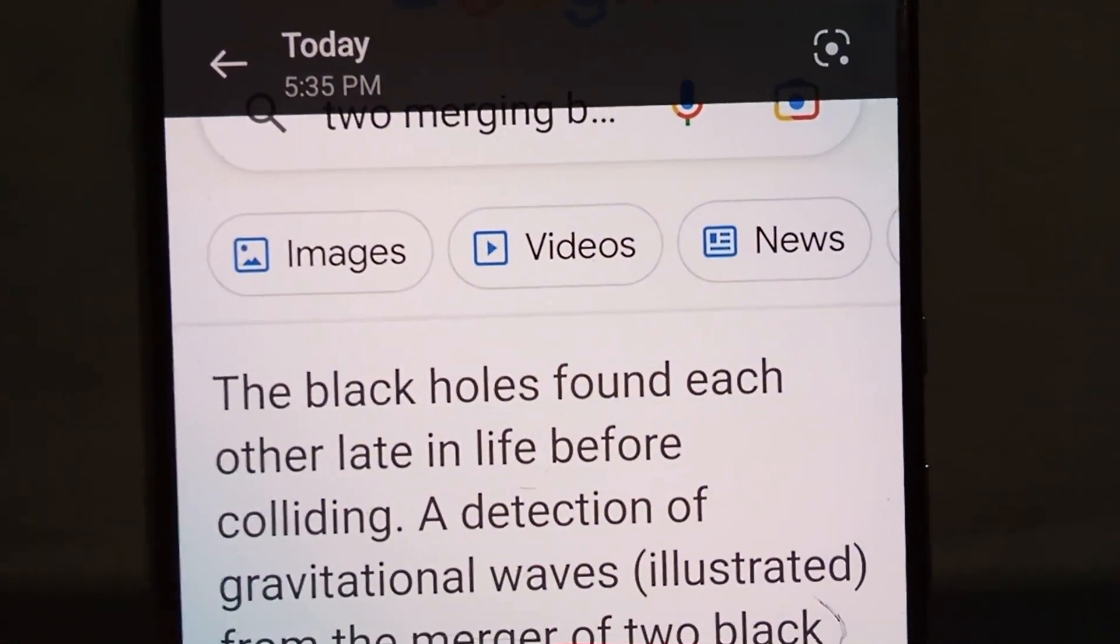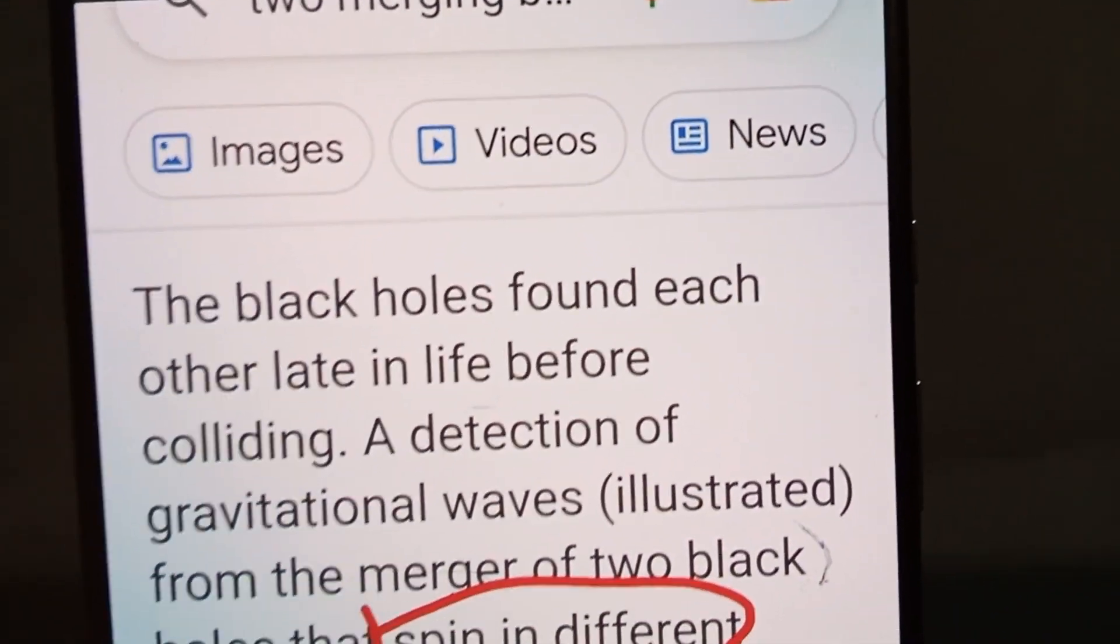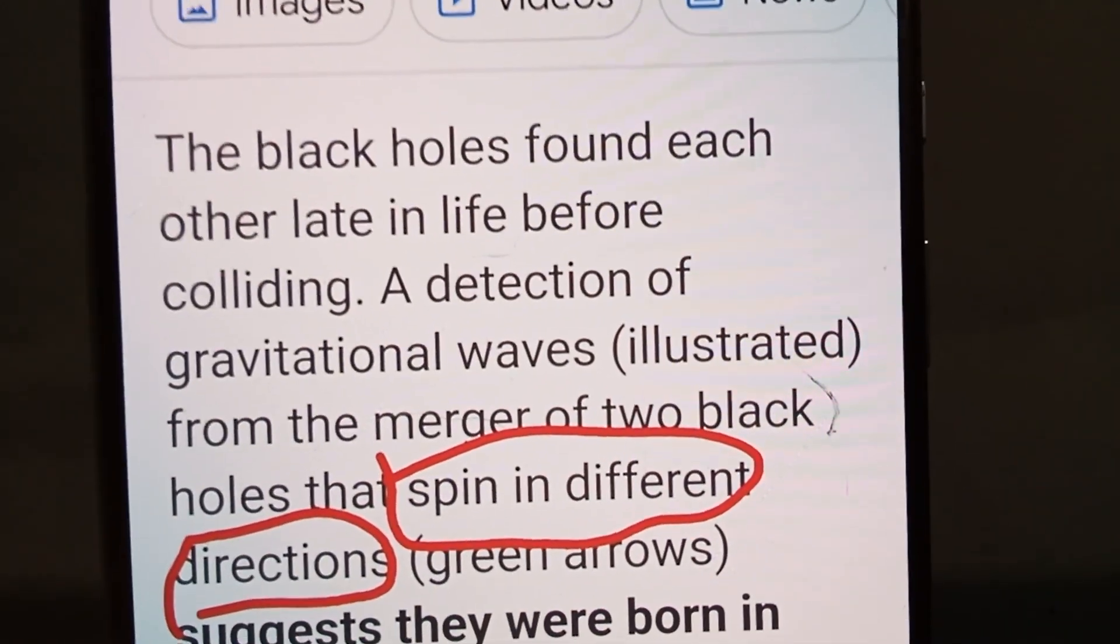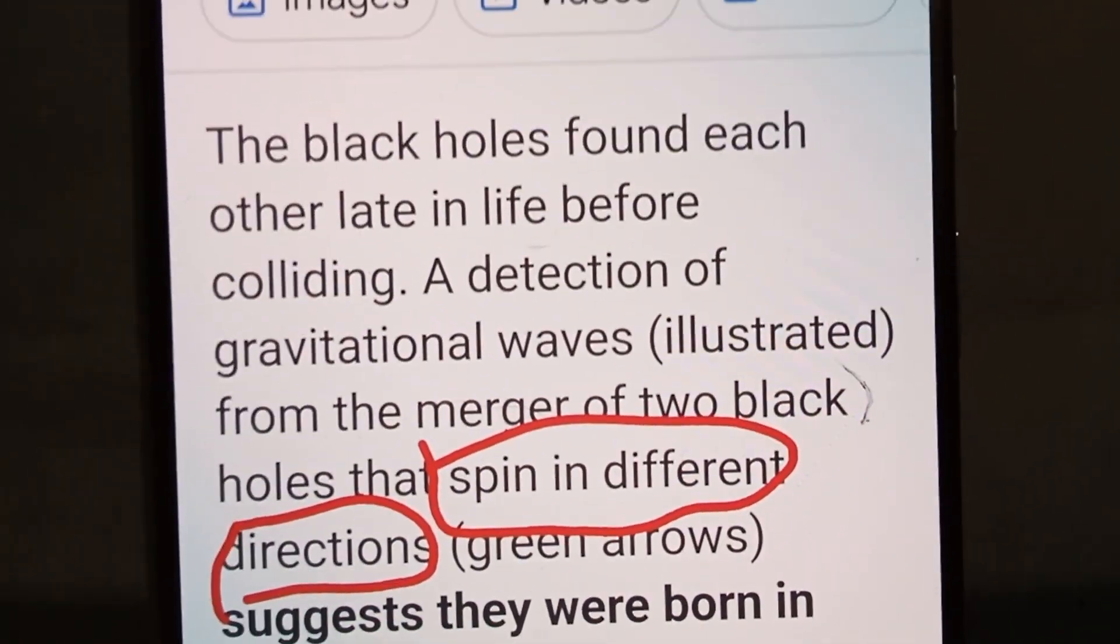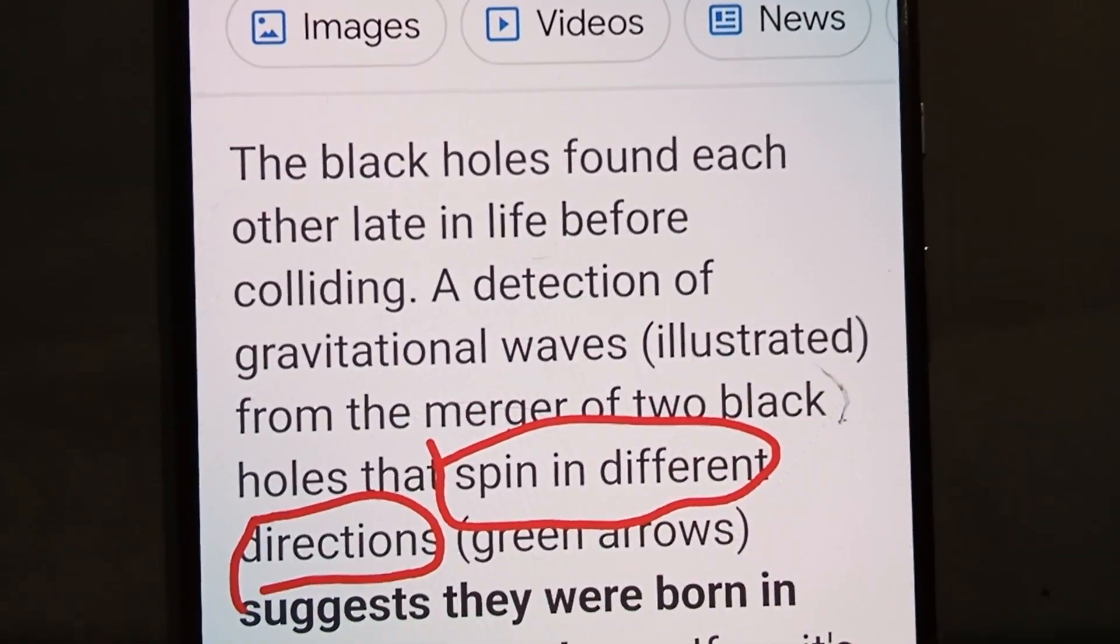The other interesting thing about these black holes is—let me get into my research I've already done and have on my phone. That's why I'm doing it this way. It says the black holes found each other late in life before colliding. Yeah, whatever. But they spin in different directions. Now, we've discussed that we live in